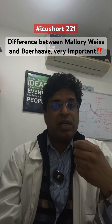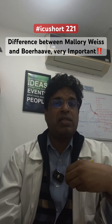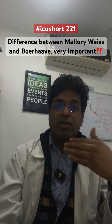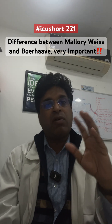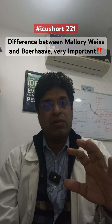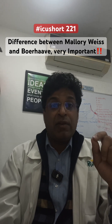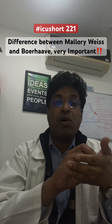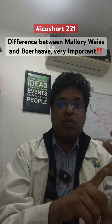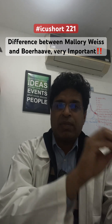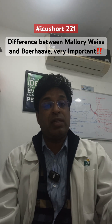In Mallory-Weiss syndrome, only the mucosa or submucosa gets damaged, so there is bleeding and it can be managed conservatively or, if required, endoscopically by clipping. But in Boerhaave syndrome, all three layers — submucosa, muscularis, and adventitia — are damaged, causing esophageal rupture.